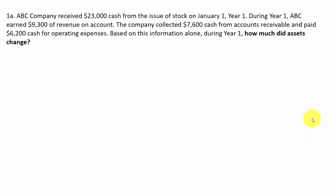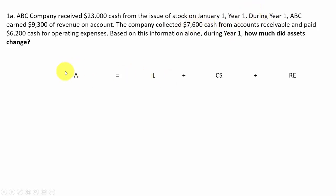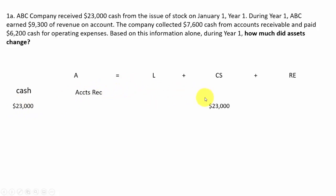First question: they want to know how much did assets change. The ABC company received $23,000 cash from the issue of common stock on January 1st, year one. Here's our accounting equation — assets on the left side have to always equal the right side, which would be liabilities, common stock, and retained earnings. Cash goes up $23,000 on the asset side, and on the right side, common stock goes up.